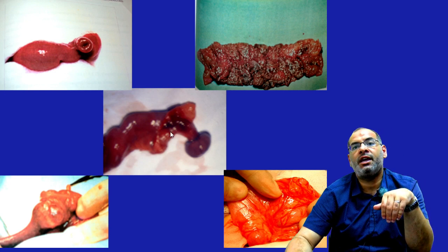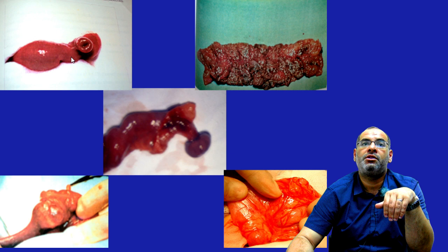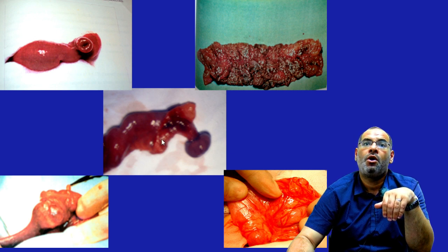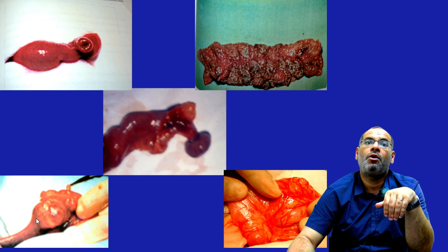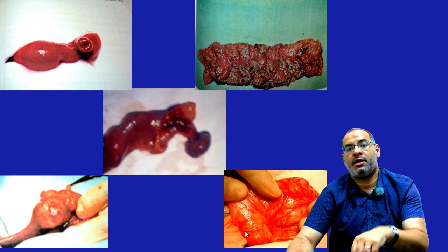For the secondary intussusception, it can be like in this example: Meckel's diverticulum, or an intestinal polyp, or duplication, or even an ectopic pancreas.